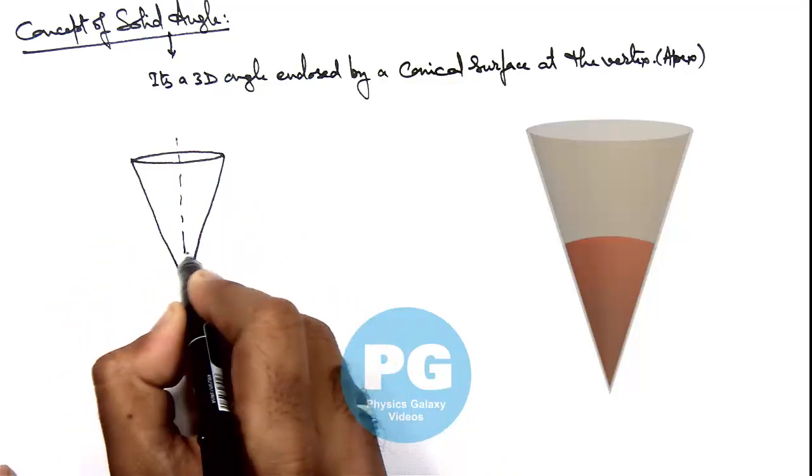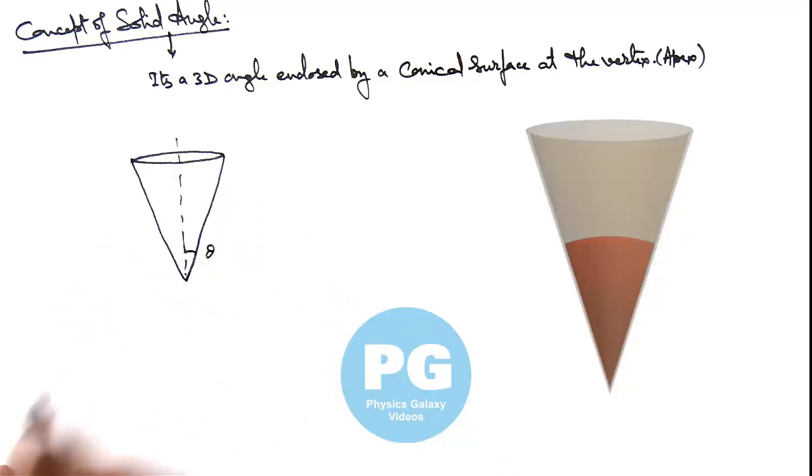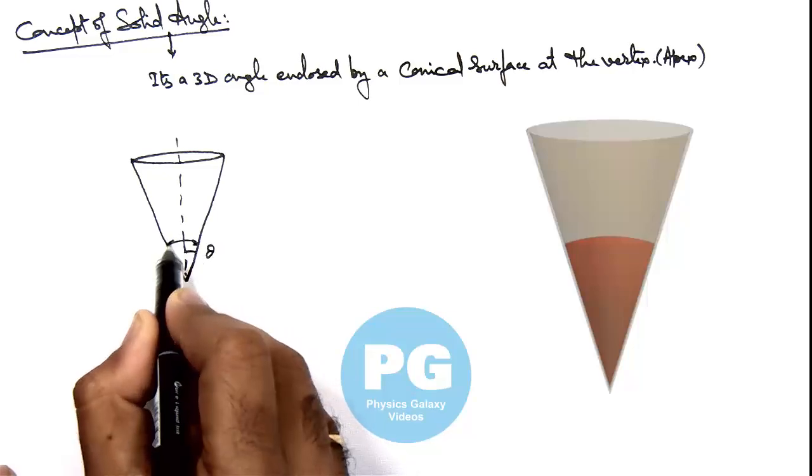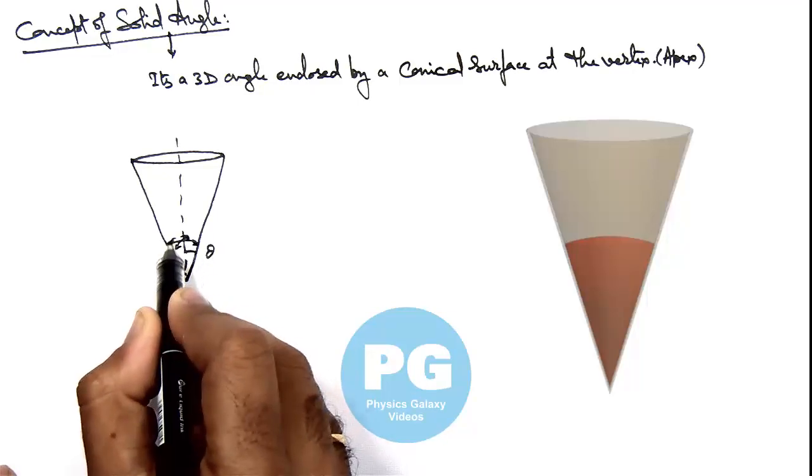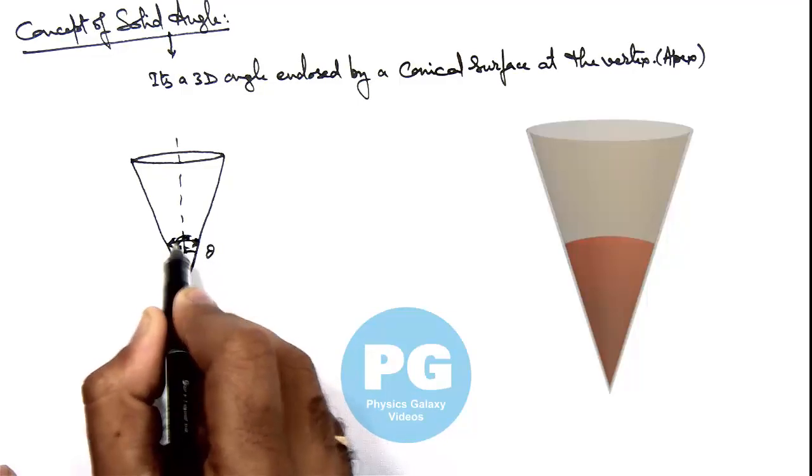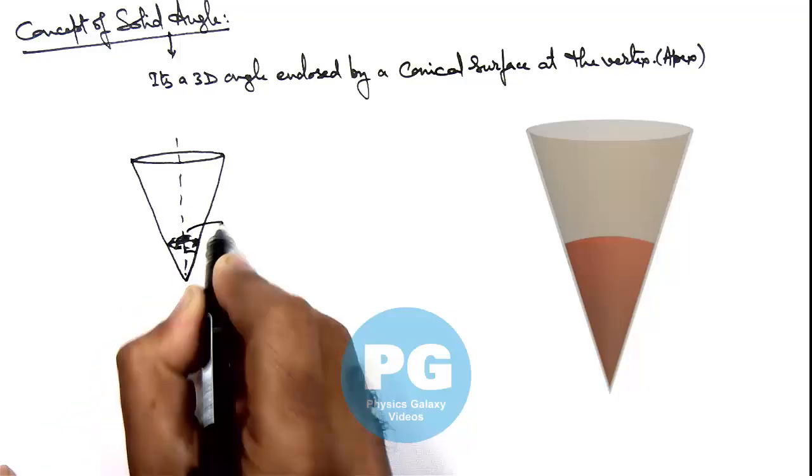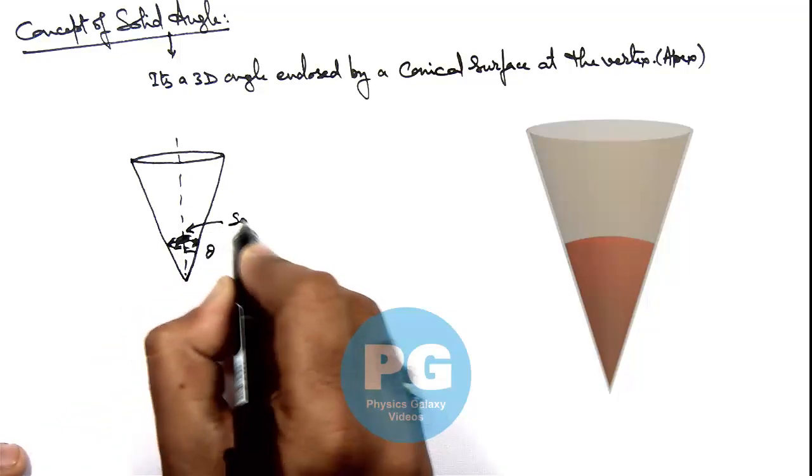If this is a 3 dimensional cone and if this is half angle theta of cone, then I am talking about this 3 dimensional space which is enclosed by this region. And this 3 dimensional region enclosed is called a solid angle.